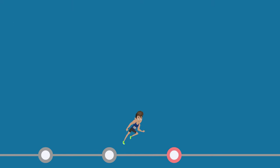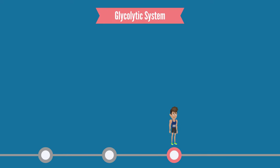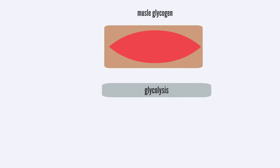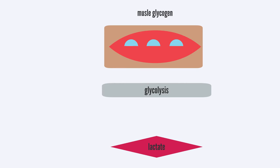Exercise lasting longer than 30 seconds will go on to derive most of its energy from the short-term anaerobic glycolytic system. This system is the primary energy contributor for exercise lasting 1 to 2 minutes long, such as a 440-meter run or 100-meter swim. This system involves the breakdown of glycogen stored in our muscles into lactate. Factors that cause glycolysis to halt after 2 minutes include the buildup of hydrogen ions, a by-product of glycolysis, causing the muscle to become acidic and deactivate the enzymes that work within the glycolytic cycle.